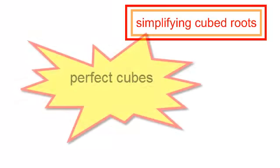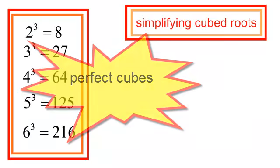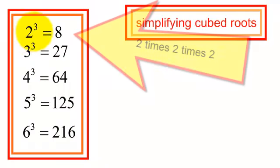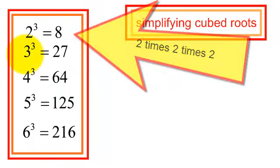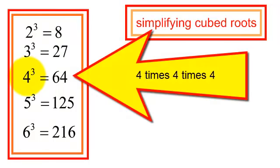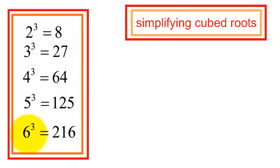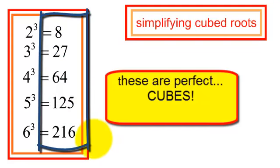Let's get familiar with perfect cubes. 2 to the 3rd, or 2 cubed, is 8 — that is 2 times 2 times 2. 3 to the 3rd: 3 times 3 times 3 is 27. 4 to the 3rd: 4 times 4 times 4 is 64. 5 to the 3rd is 125. And 6 to the 3rd is 216. I need to get familiar with these numbers — 8, 27, 64, 125 — that are perfect cubes.